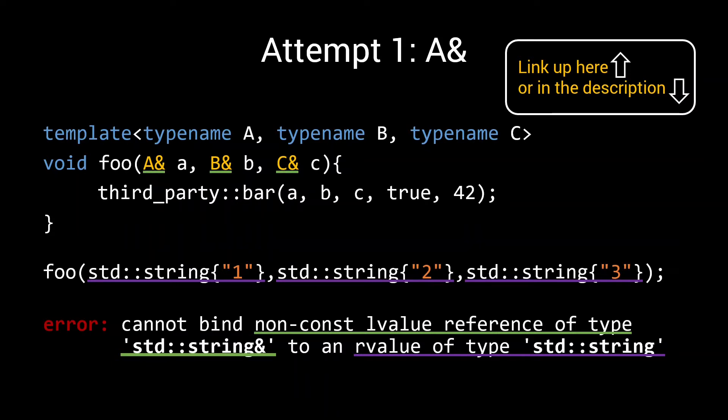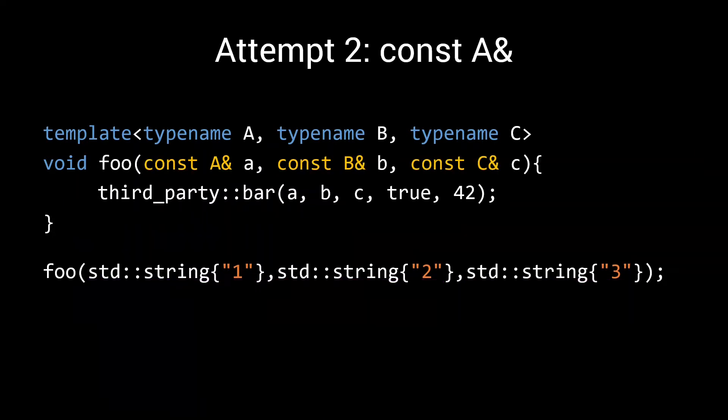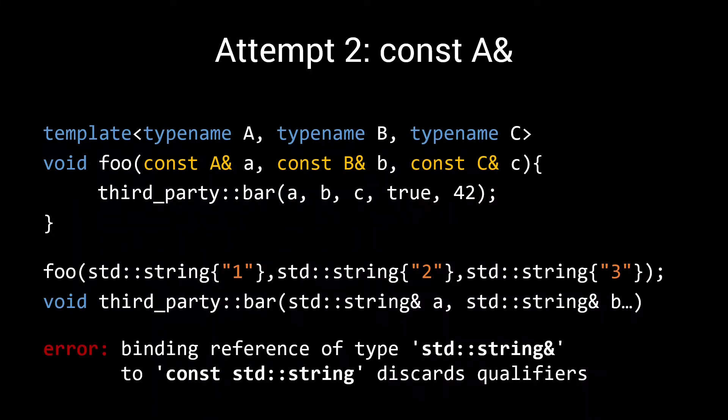Okay, so an l-value reference clearly doesn't work. But what if we make it a const l-value reference? Now we can bind both l-values and r-values. Of course, this gives us another problem. Because, if our third-party function bar actually accepts its inputs as a non-const reference, then in that case we'll get another error. Error binding reference of type string to const string discards qualifiers.